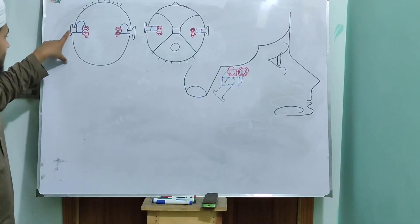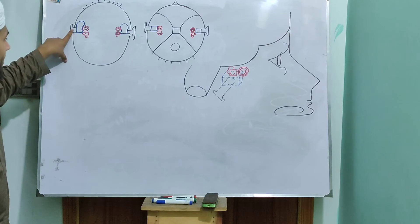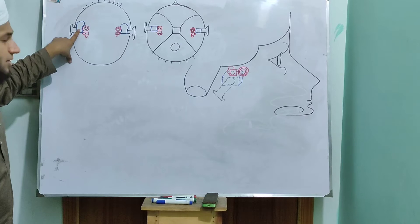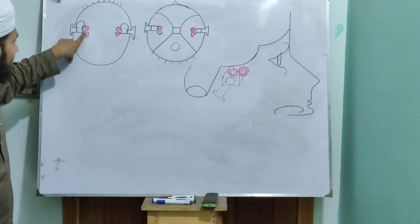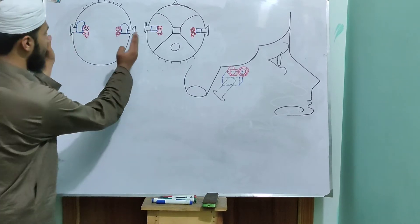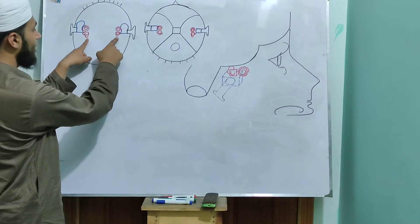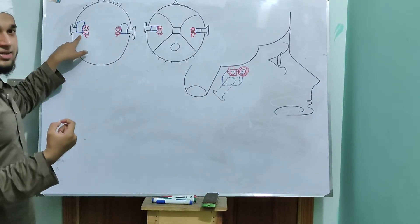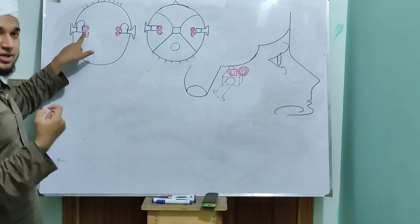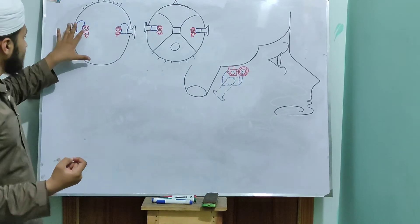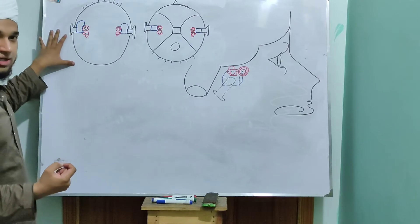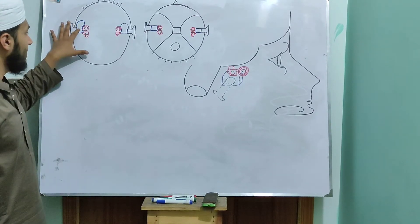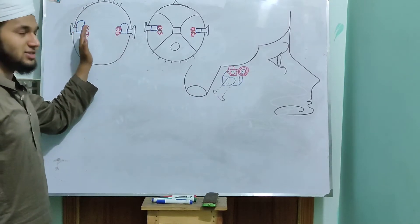As you can see in this picture, this is the external ear — the external auditory apparatus. Then we have the middle ear, and then the inner part, which is the medial part, which is the internal ear. So the middle ear is between the external and internal ear. The external ear is on the outer or lateral side, and the internal ear is on the middle or inner side.